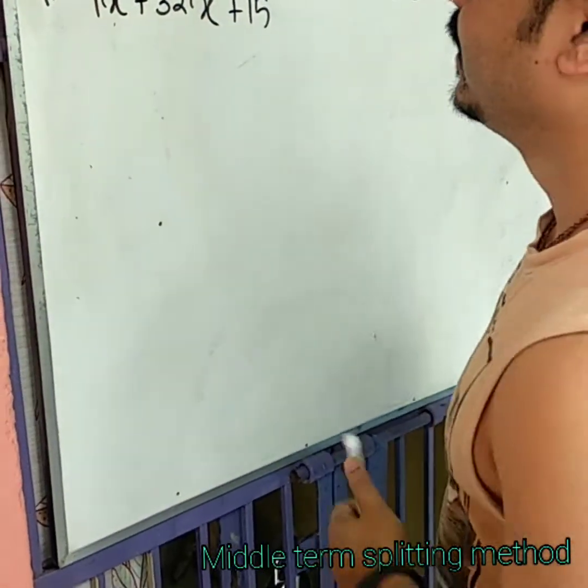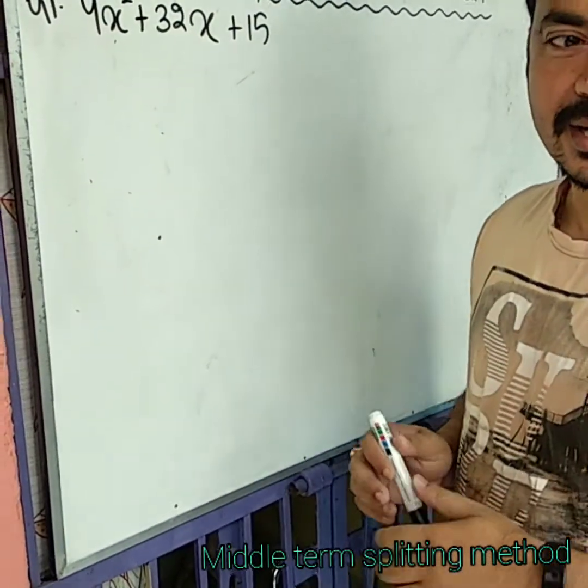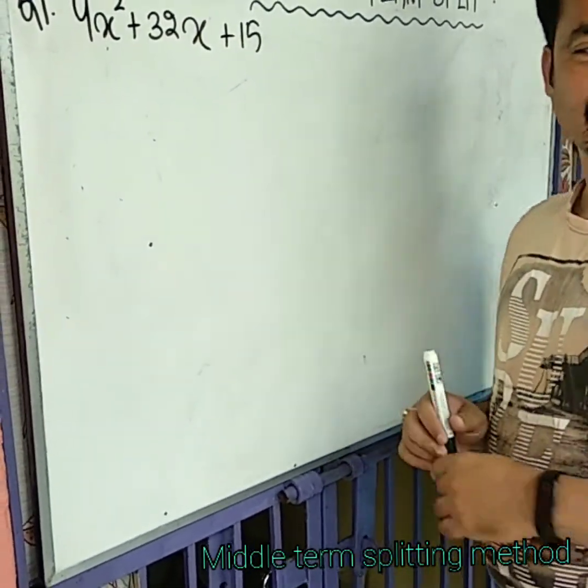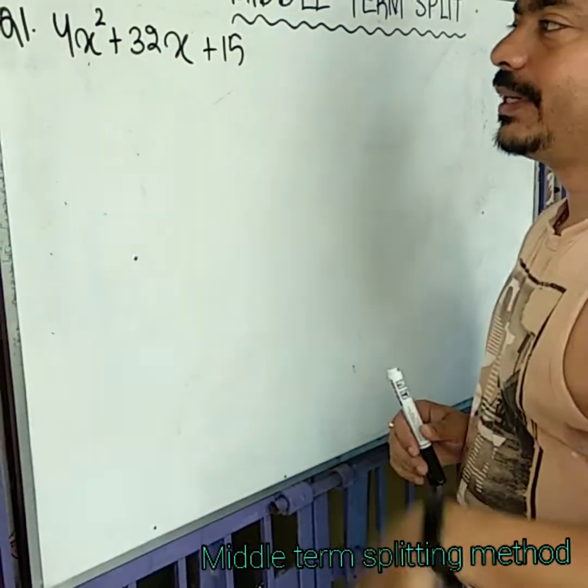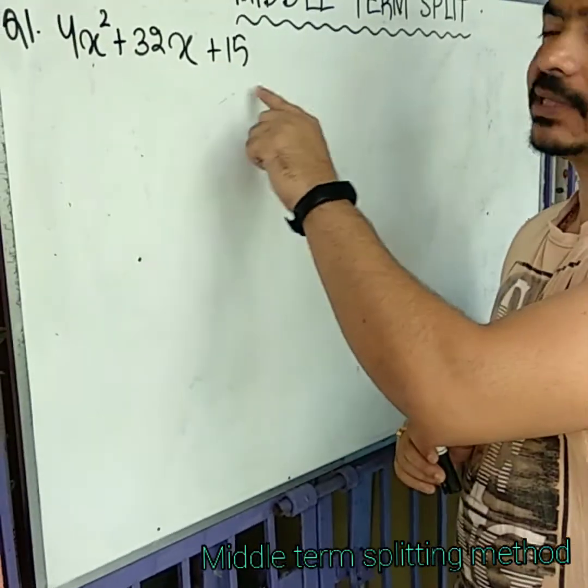Good morning all, today we are going to show you the middle term split. This is quadratic polynomial 4x² plus 32x plus 15.